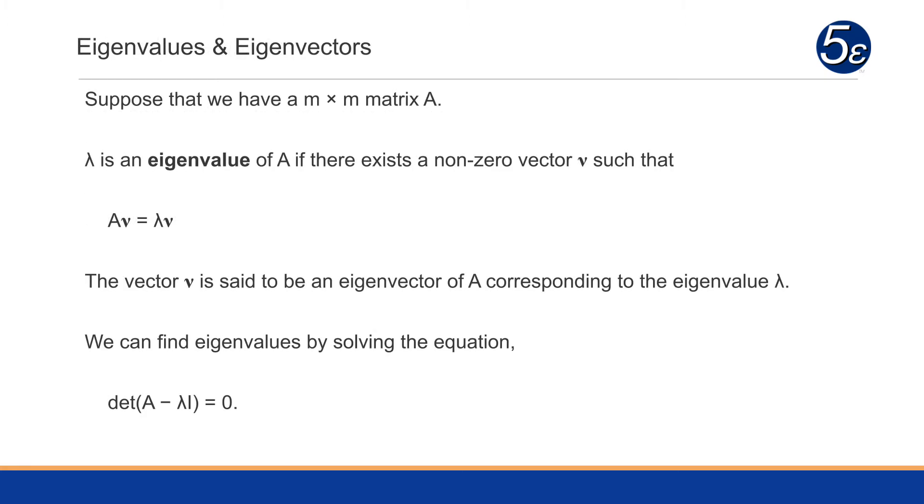So let's suppose that we have a matrix, an M by M matrix, called A. Now, we can say that lambda is an eigenvalue of A if there exists a non-zero vector nu, that's the Greek letter nu, N-U.